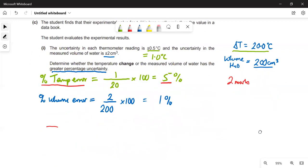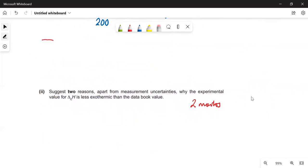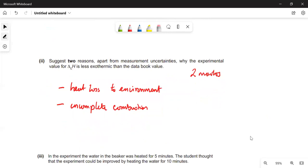Two reasons why the experimental value for delta H combustion is less exothermic. The main one, which is mostly due to, is you are getting heat loss to the environment. Not all the heat goes to heat that water up, a lot of it goes to heat the air up around it. And secondly, which is probably less important, is you will also get some incomplete combustion. The first one would be responsible for most of that error.